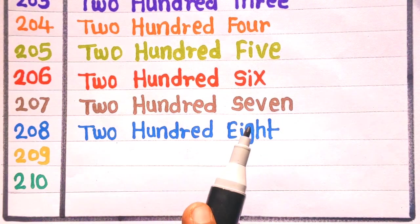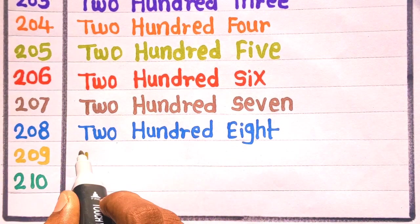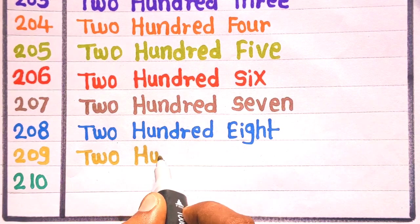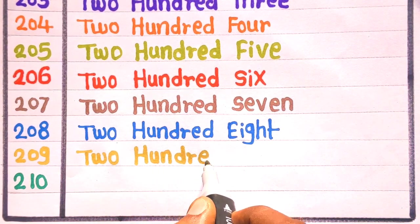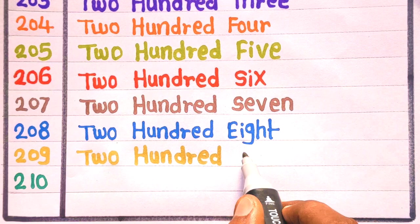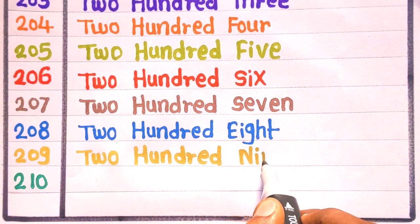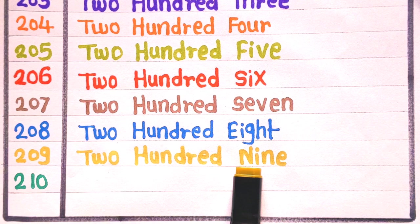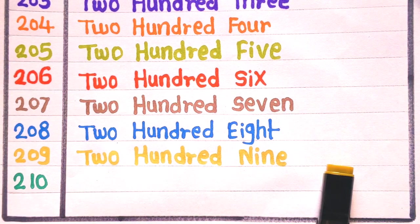209. E is 209. T, W, O, 2, H, U, N, D, R, E, D, 100, N, I, N, E, 9, 209. With the olive green color.